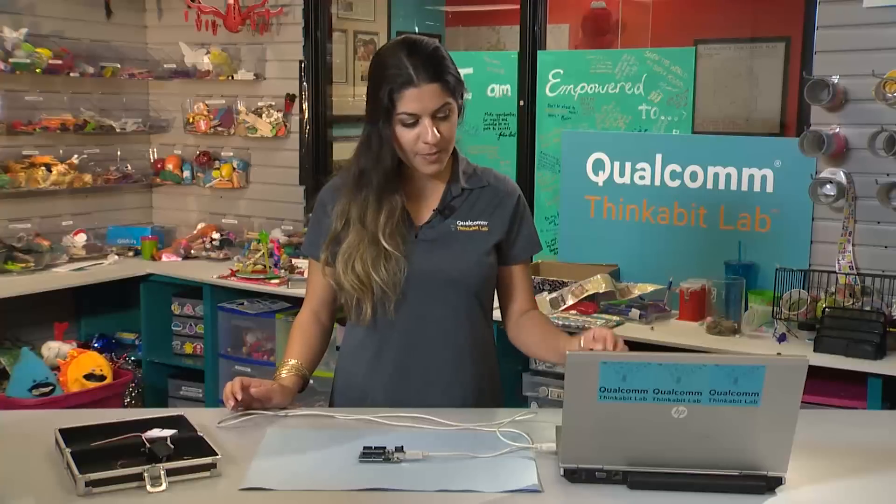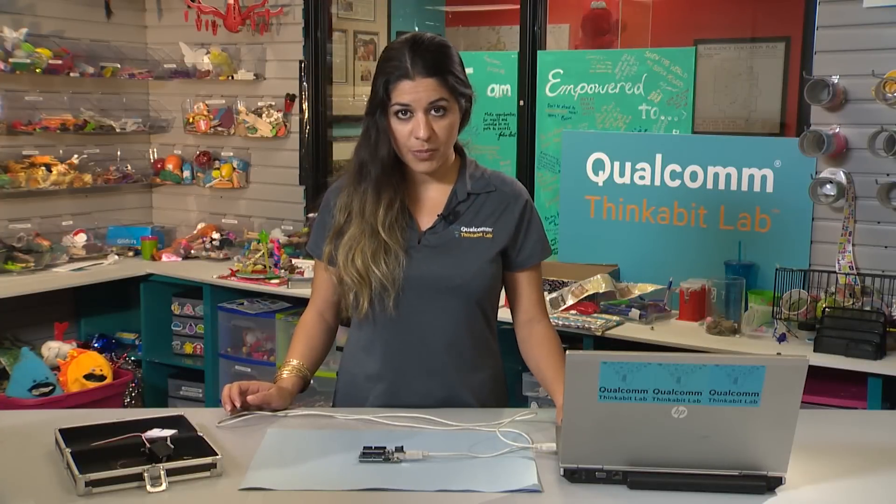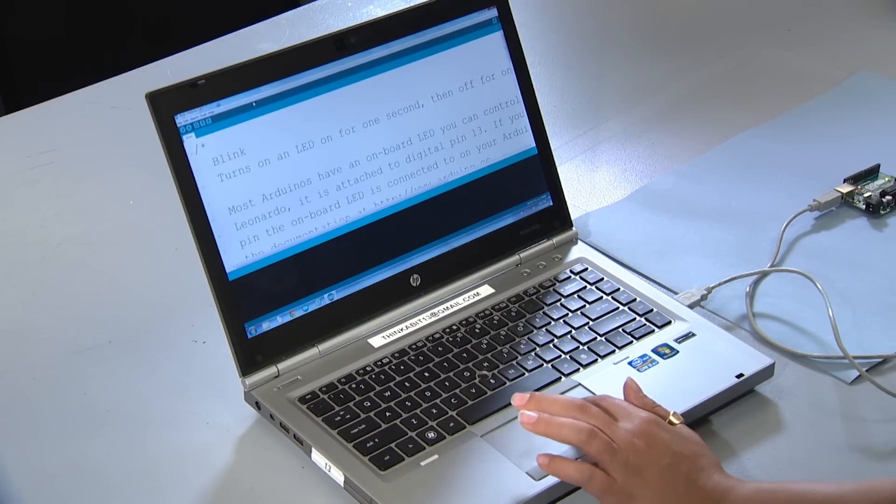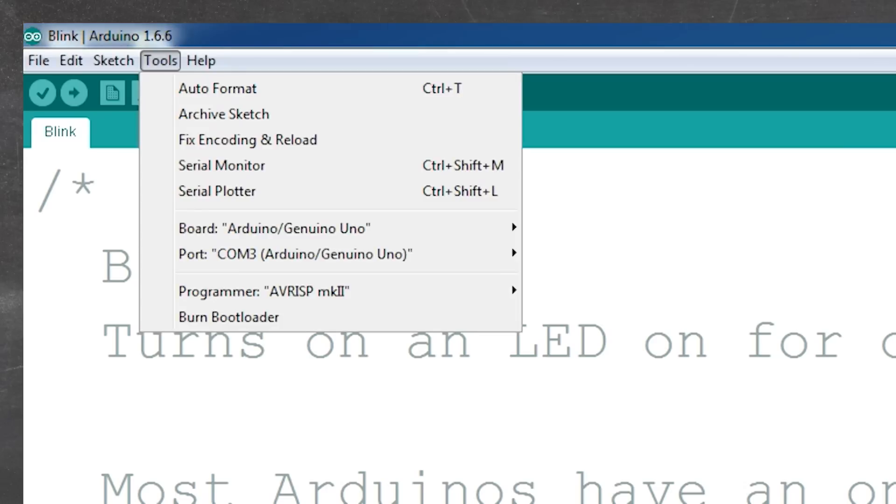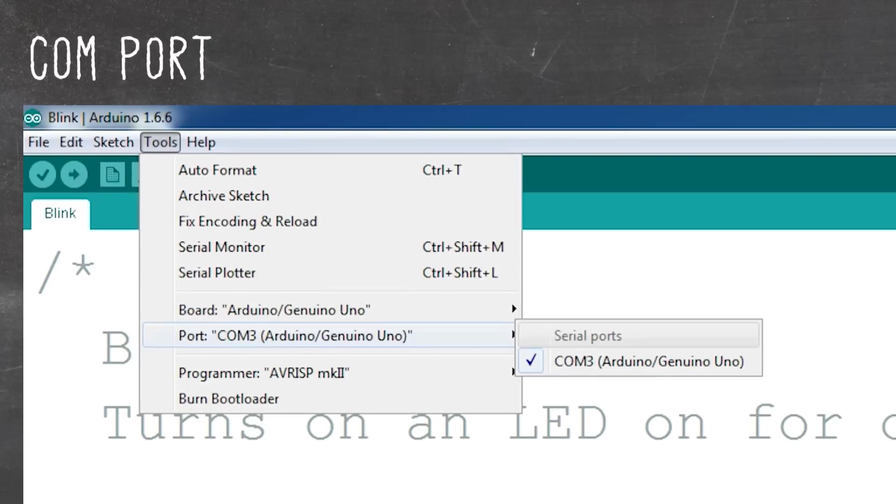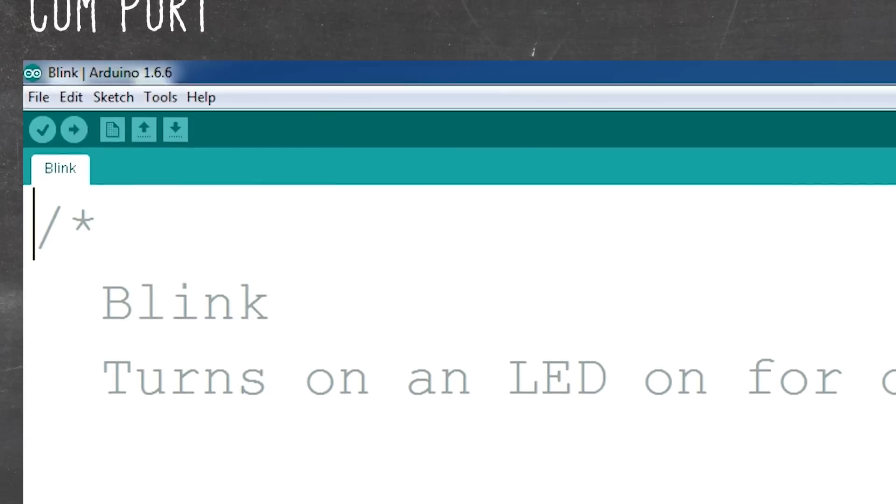It takes a moment for the Arduino to register on your computer. Once it has, go ahead and go to Tools, find Port, and choose the COM port number that is associated with Arduino Uno. Then click that.